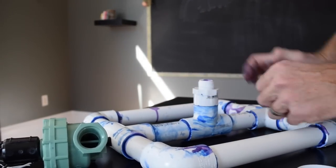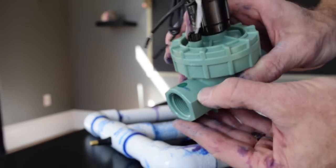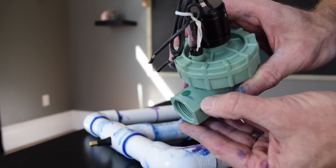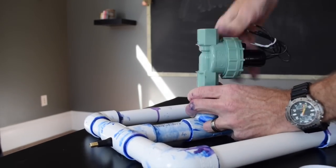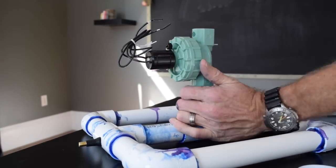The valve is threaded onto the 3/4 inch PVC fitting making sure that the flow direction arrow on the valve is pointed away from the air chamber. Teflon tape ensures that there will be no air leaks through the pipe threads.